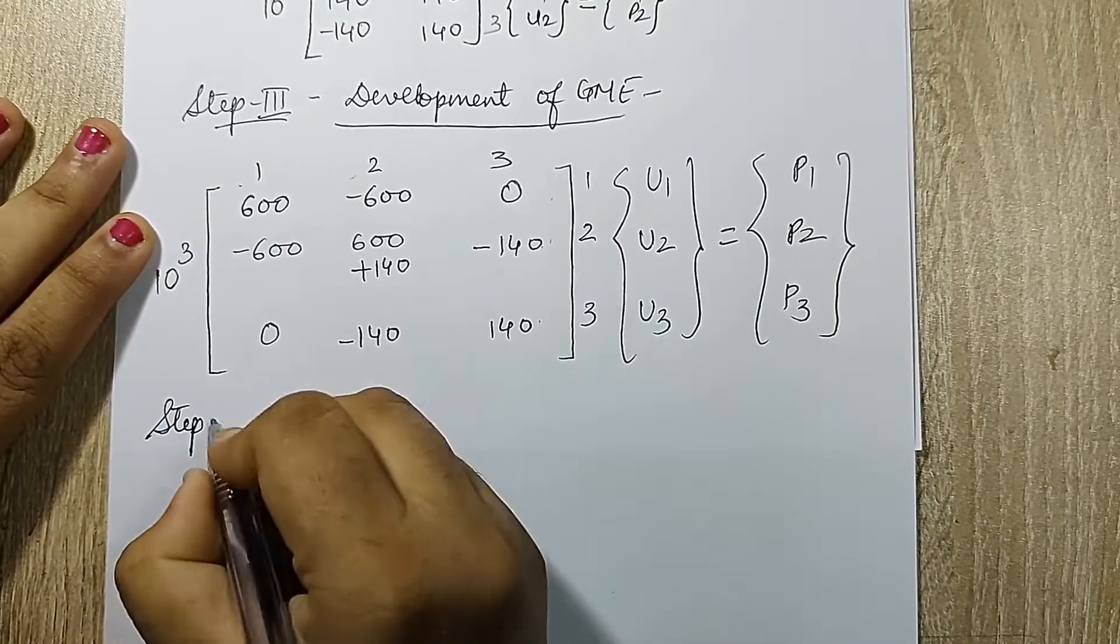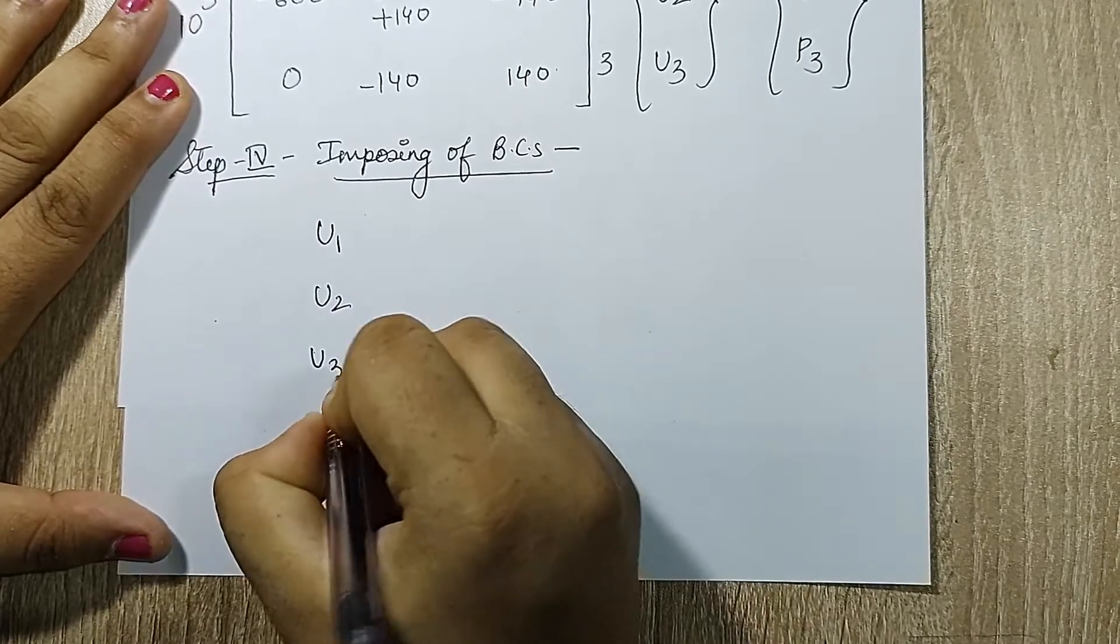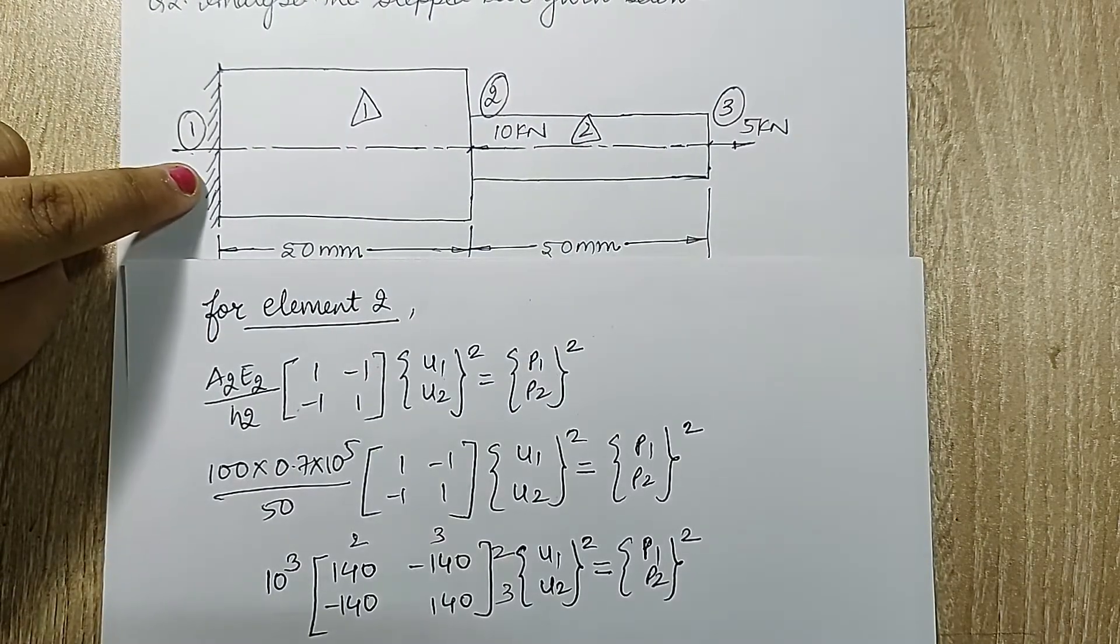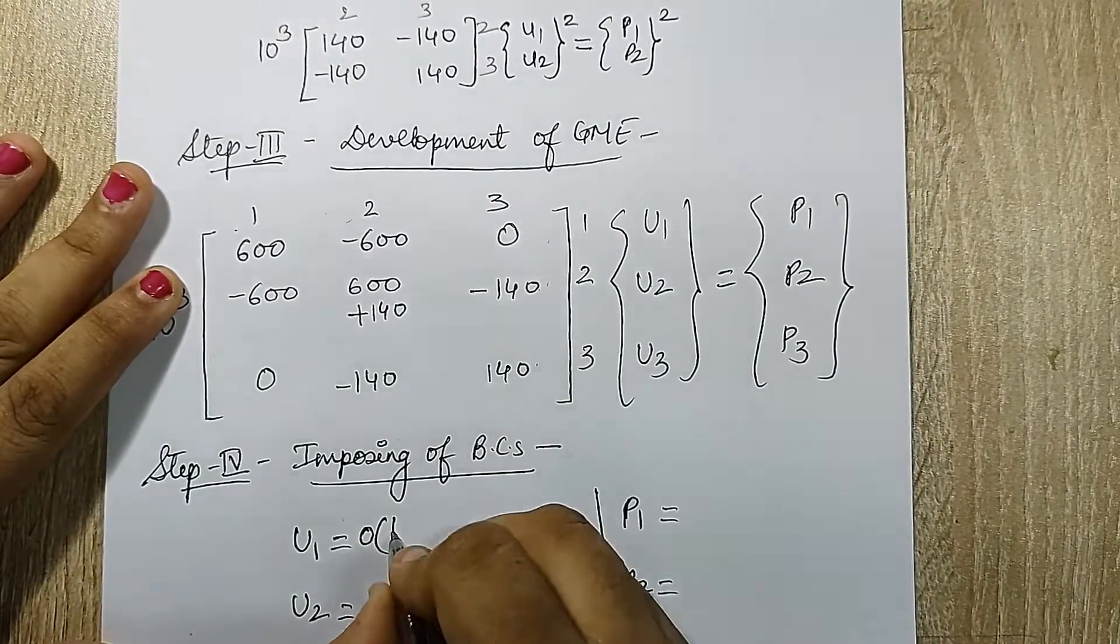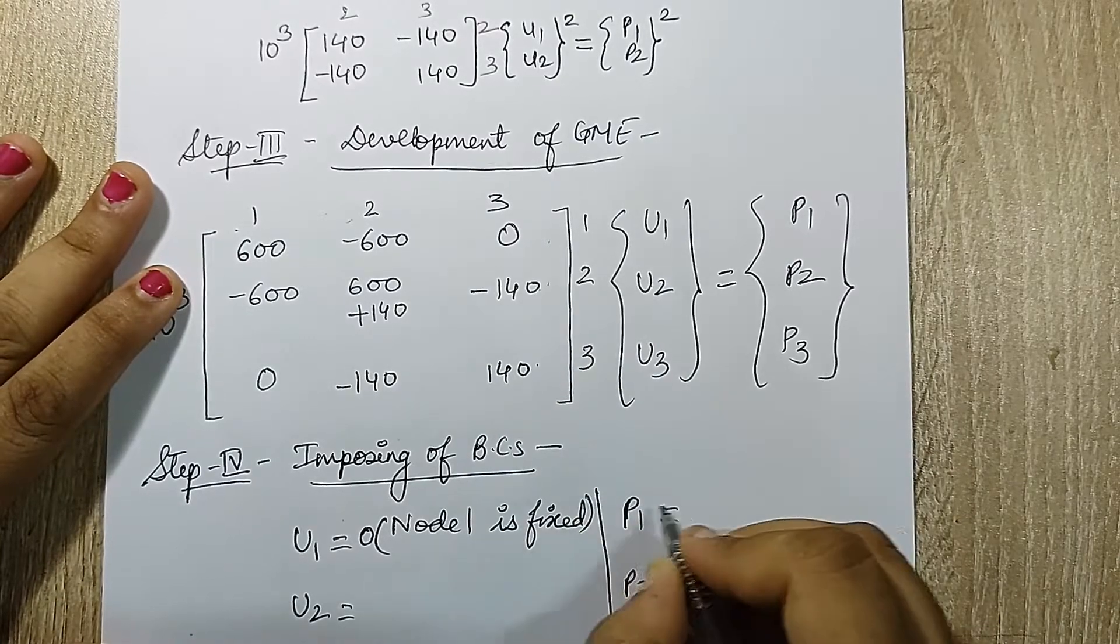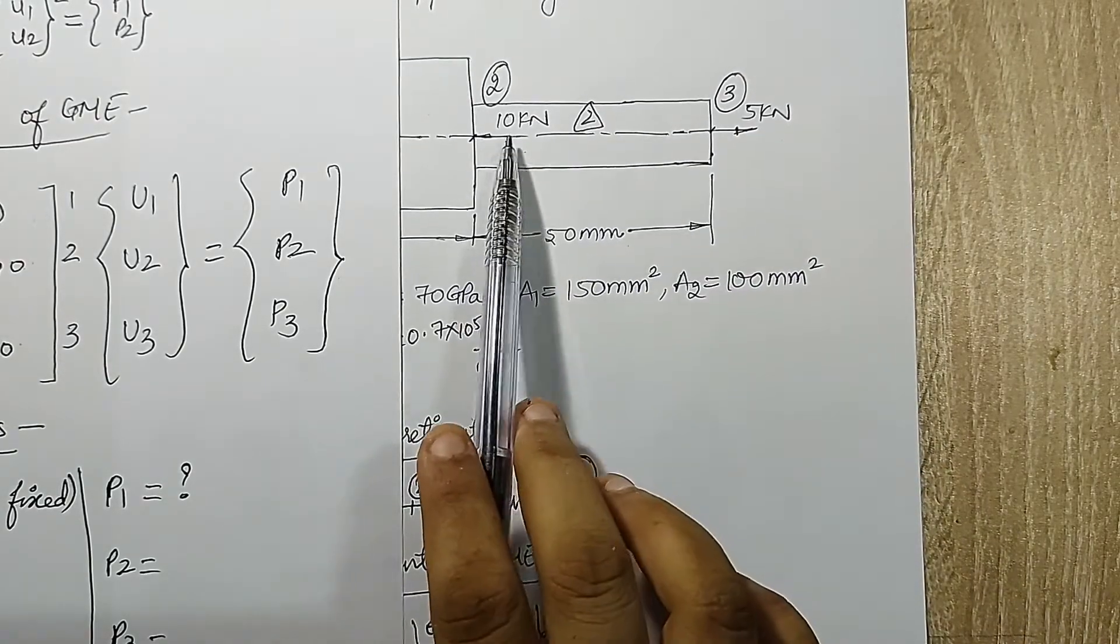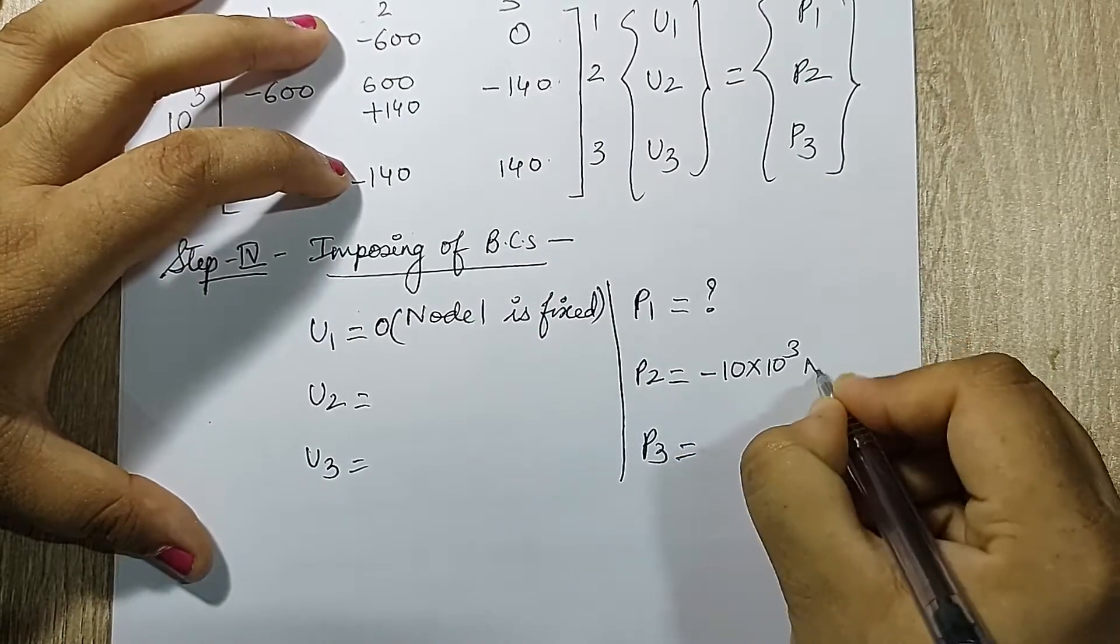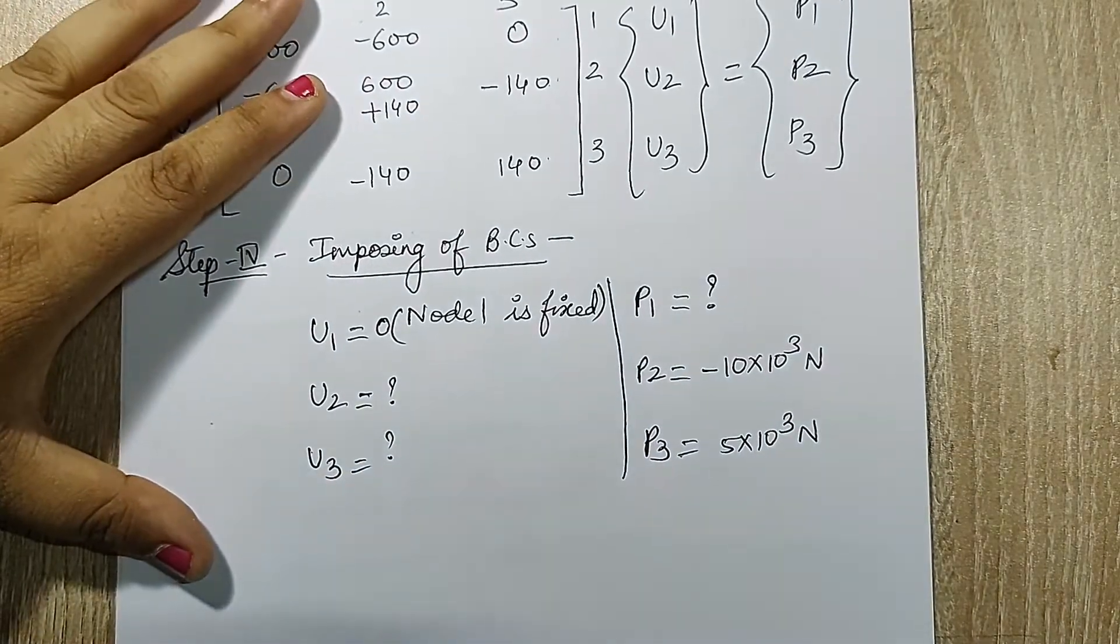Next I will go for step 4, imposing of boundary conditions. The variables that are unknown to me are u1, u2, u3 and I have p1, p2, p3. I will refer the main figure given to me in the question. Node 1 is fixed. At node 3 and 2 I can see some loads being applied. I will start with u1 being 0. Since node 1 is fixed, it will apply some reaction force, so p1 will be a question mark. The value of p2 is 10 kilonewton and p3 will be 5 kilonewton. I will just check the direction. They are opposite. So I will use a negative sign for 10 kilonewton and a positive sign for 5 kilonewton. Here I will write down minus 10 into 10 raised to 3 newton and this is 5 into 10 raised to 3 newton. If this is a value given, obviously I will have to find these two values. These are the three unknowns.